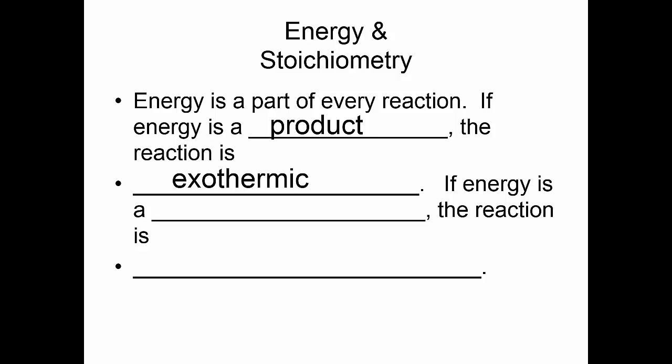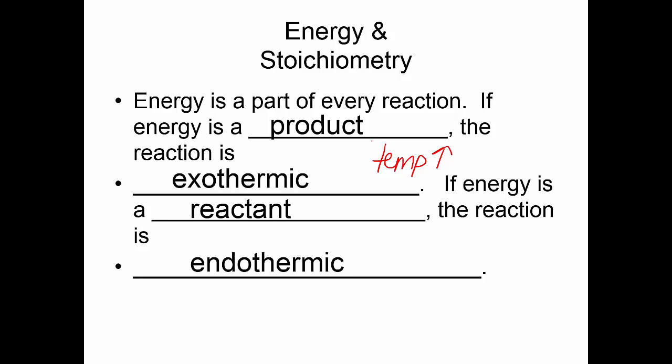What happens to the temperature? This is also very important to know: the temperature goes up in an exothermic reaction, because the reaction — the system — is losing energy to the surroundings. We always take our measurements in the surroundings. If energy is taken in, or is a reactant, or is absorbed — all meaning the same thing — then we say it's endothermic. Endothermic reactions get colder, so the temperature goes down because the system is taking the energy, and you see a lack of energy in the surroundings.